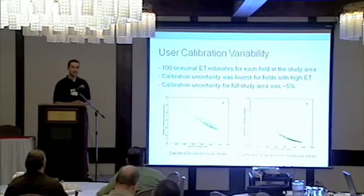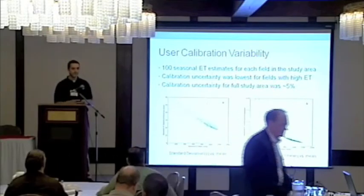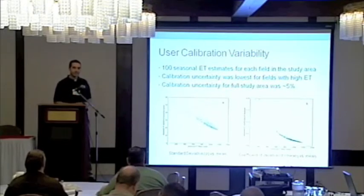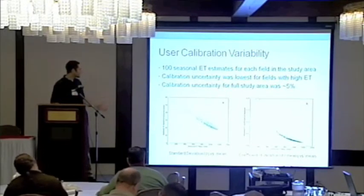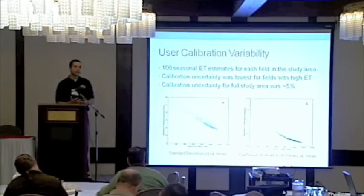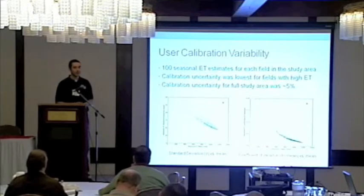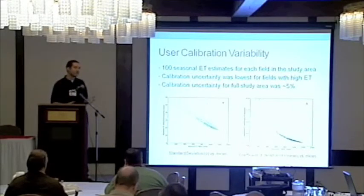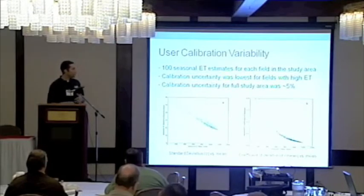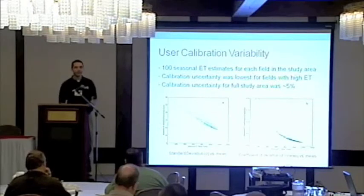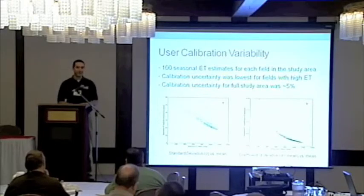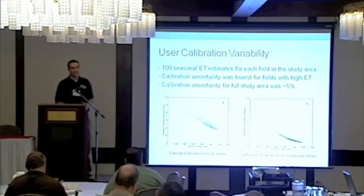Per field, we calculated the seasonal ET — averaged the ET for each of the 100 runs, made a separate seasonal estimate, then calculated statistics. For high ET fields, it's low variation, as expected — that cold calibration point is really consistent. For hot fields there's more variation, but the ET is less, so it's not as big an issue. The overall calibration uncertainty was approximately 5% for our study area. On one hand that's a lot of water, but it's pretty good when you think about how different users are and the model itself. We were pretty excited about that.